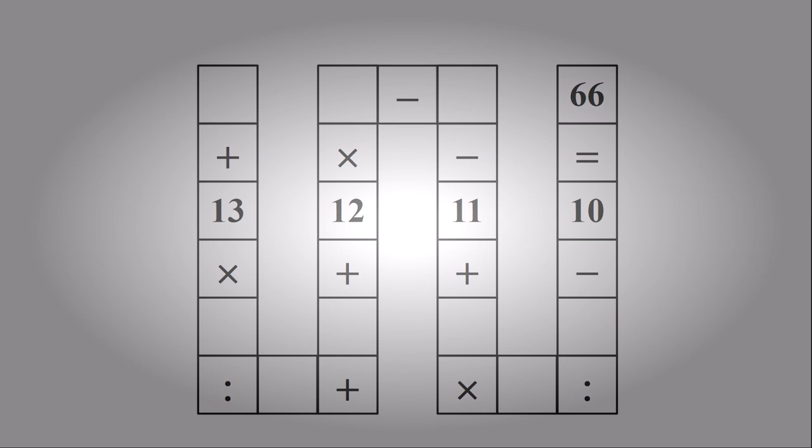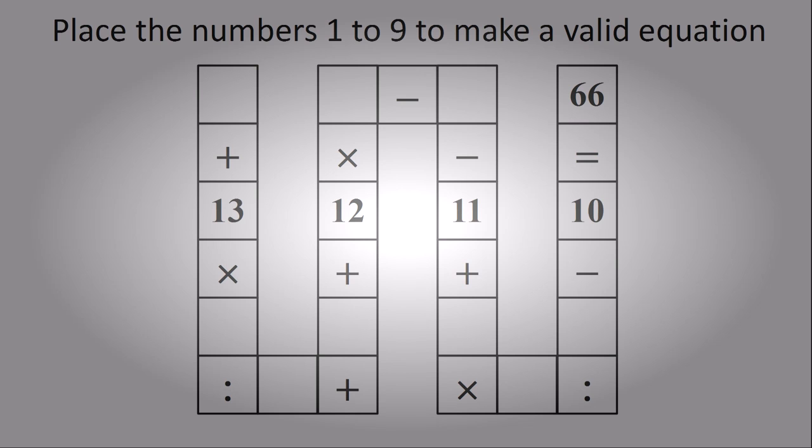This problem was asked to 8-year-olds in Vietnam. Place the numbers 1 through 9 using each number exactly once to make a valid equation.